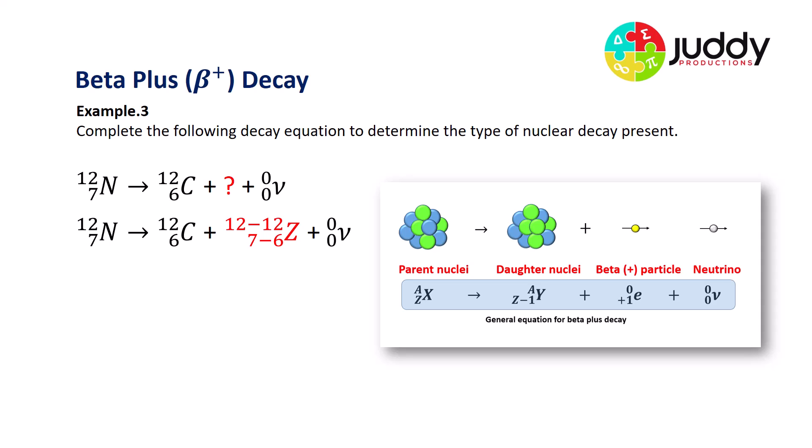If we take away the mass number of the daughter nuclei from the parent nuclei, we get zero, 12 take 12. And if we take away the atomic number of the daughter nuclei from the parent nuclei, 7 take 6, we get 1. And we know that the only particle that has an atomic number of plus 1 and a mass number of zero is a positron.